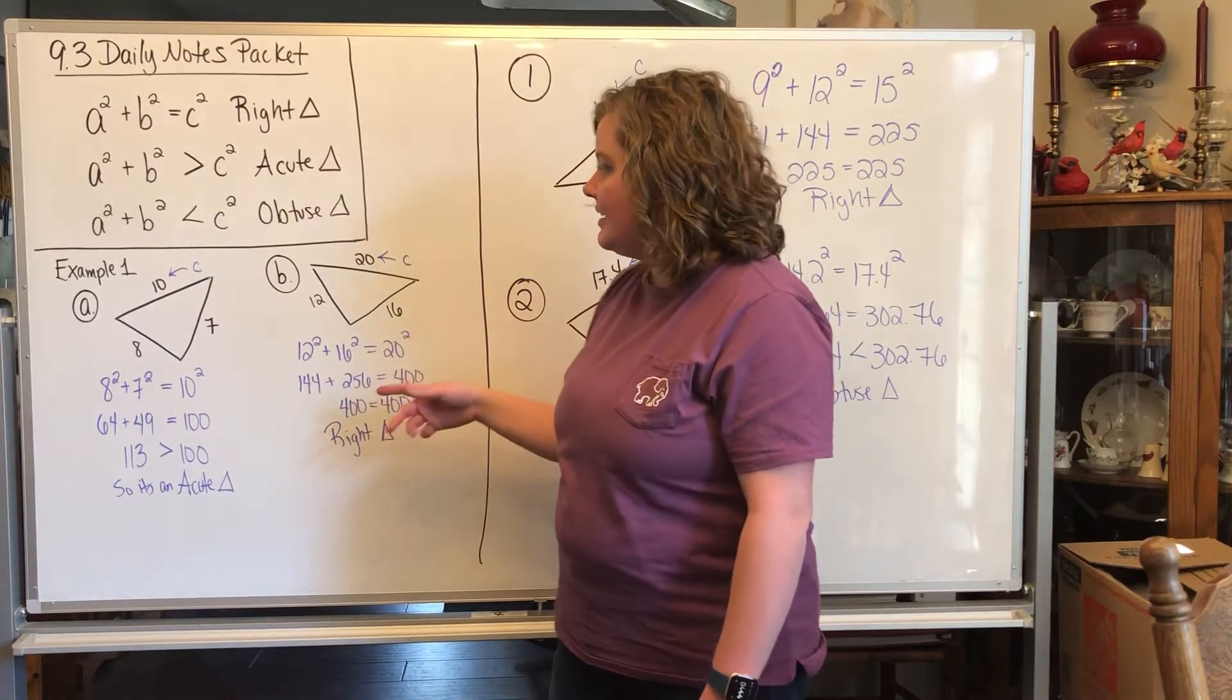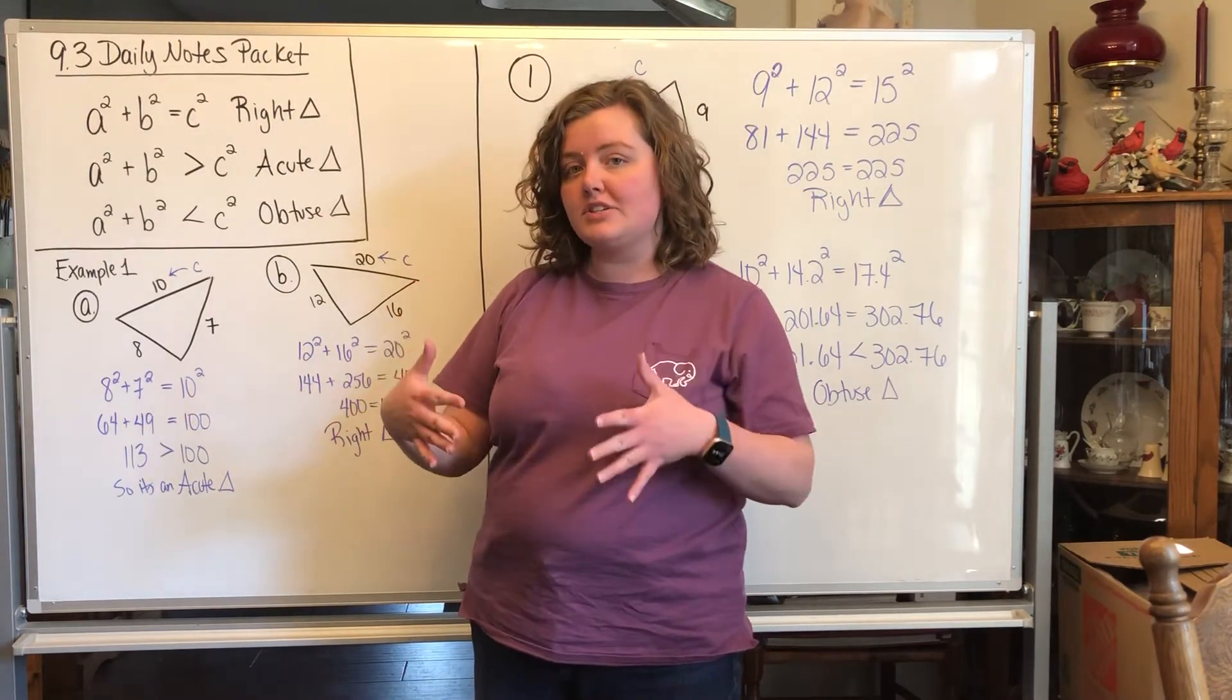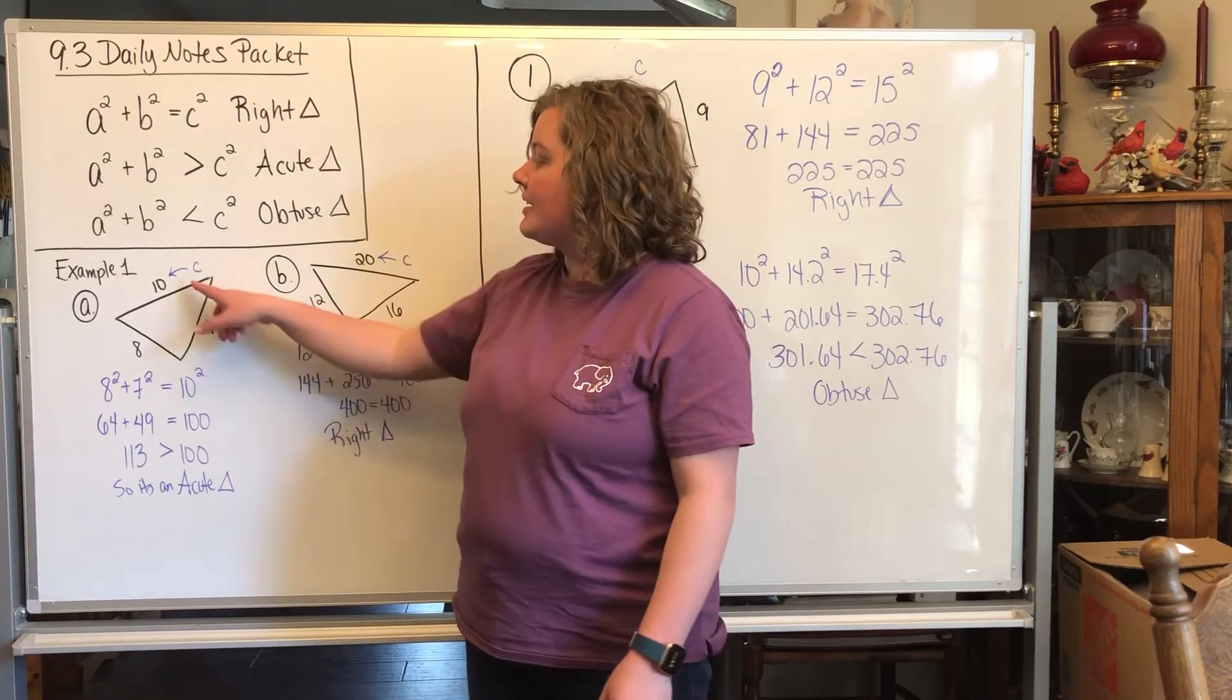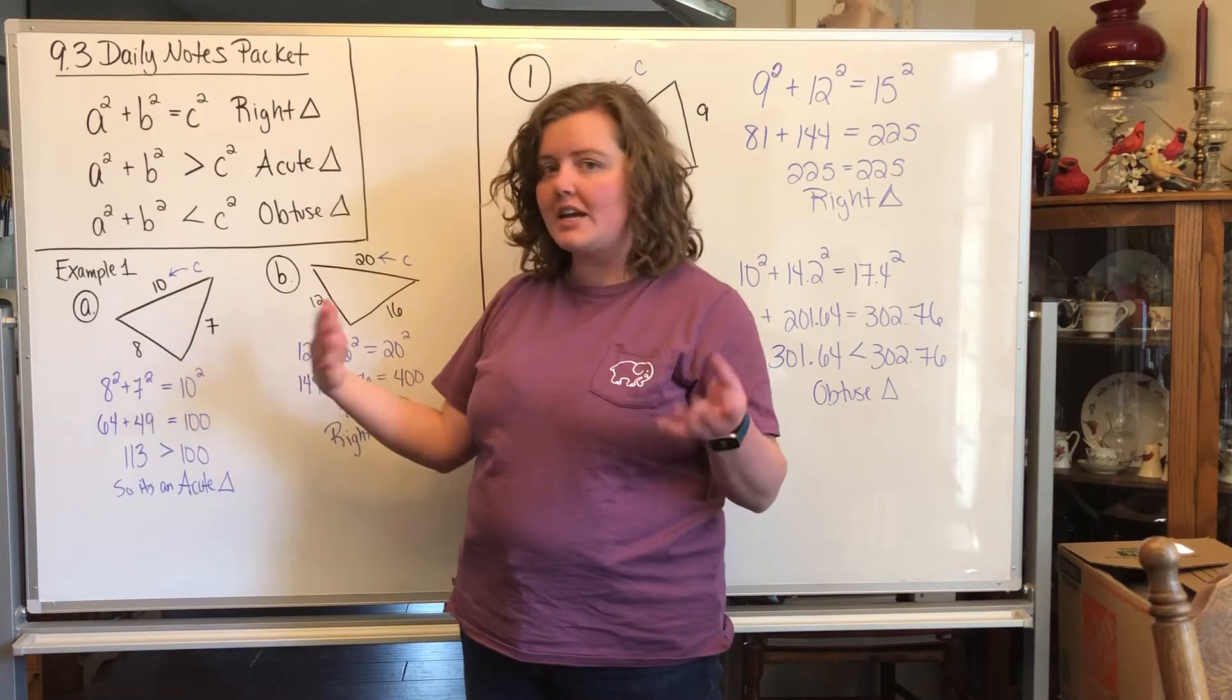So for example one, they want us to test what types of triangles these triangles are. You don't know if it's a right triangle, so you're not going to call the biggest side the hypotenuse yet, but we are going to call it c. You choose the biggest side, that's going to be your c, and then the other two are just a or b.